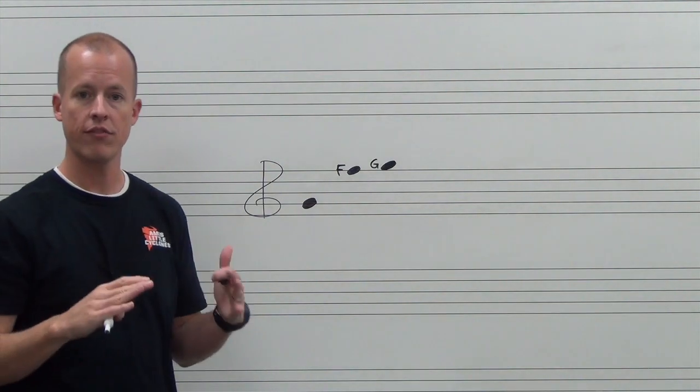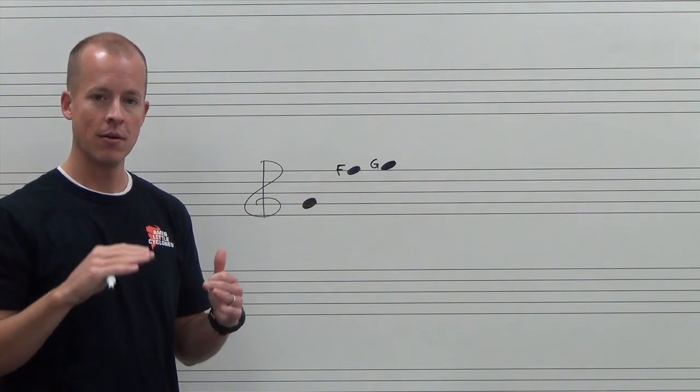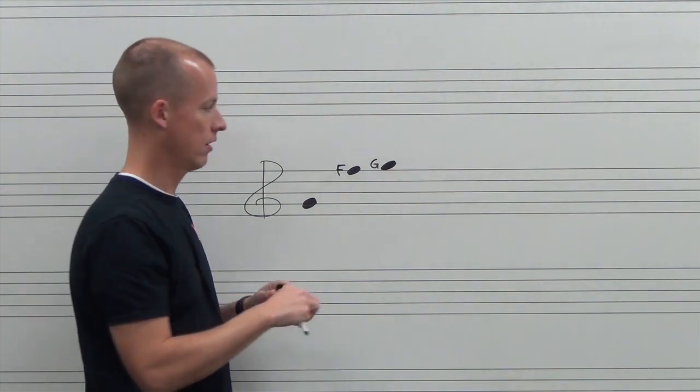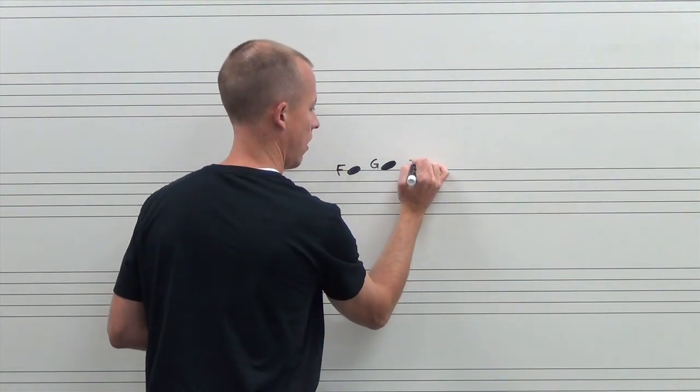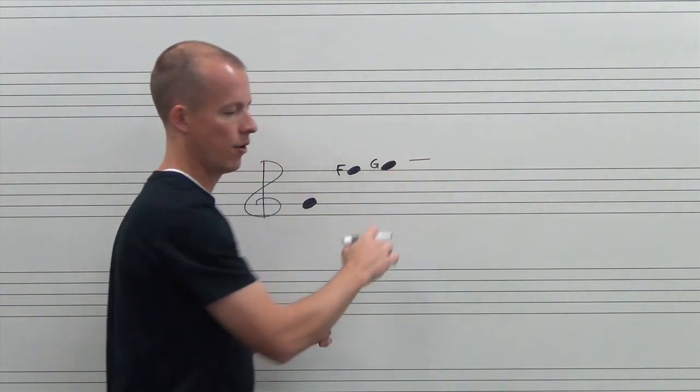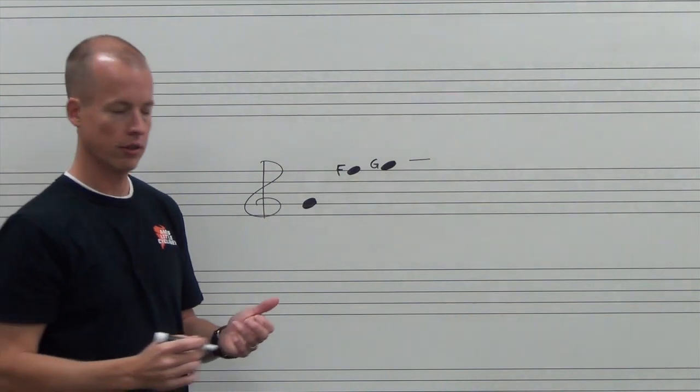From there, we've run out of lines, we've run out of spaces, but we can add extra lines to create extra high notes. And so I'll just make a short line. It's spaced at the same spacing as the other lines. And we're going to call this a ledger line.